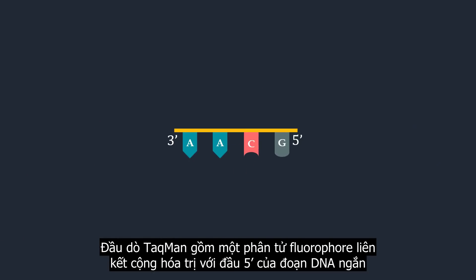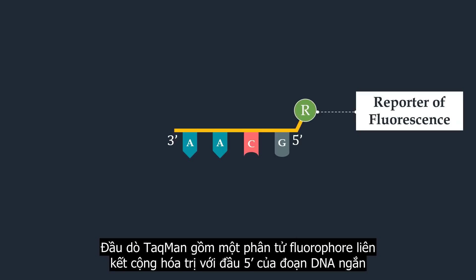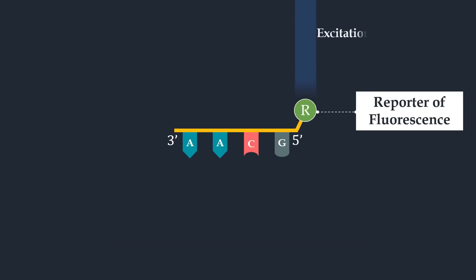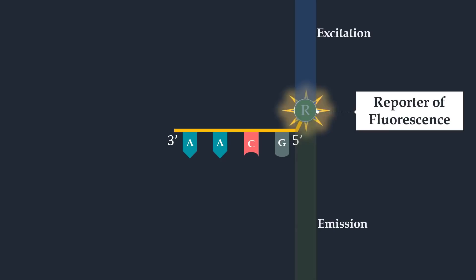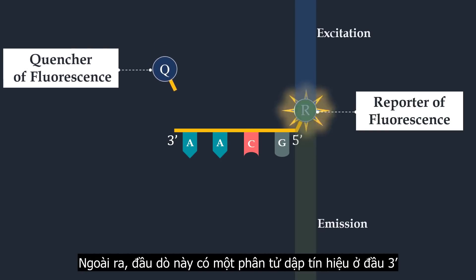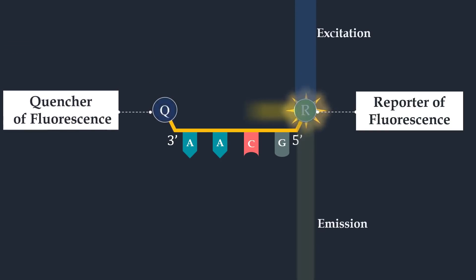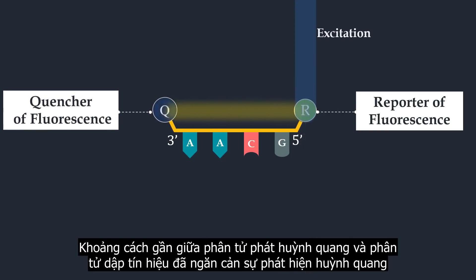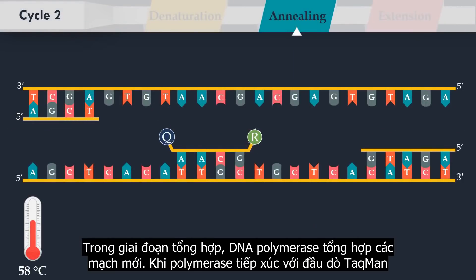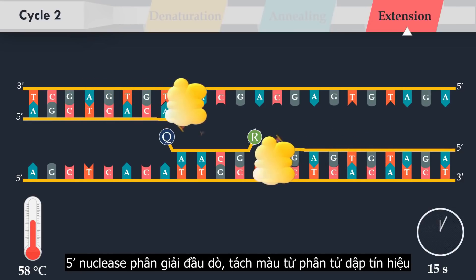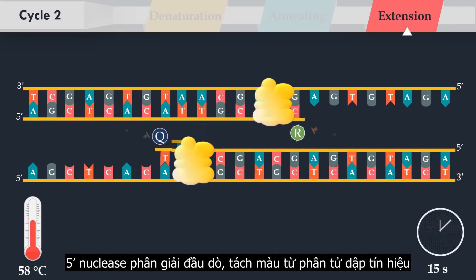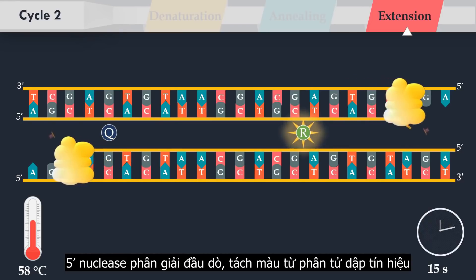The Taqman probe consists of a fluorophore covalently attached to the 5' end of the oligonucleotide probe. The fluorescence is emitted by the fluorophore when it is excited by the cycler's light source. Also, this probe consists of a quencher at the 3' end. The close proximity of the reporter to the quencher prevents detection of its fluorescence. In the extension step, DNA polymerase synthesizes new strands. When the polymerase reaches a Taqman probe, its endogenous 5' nuclease activity cleaves the probe, separating the dye from the quencher.